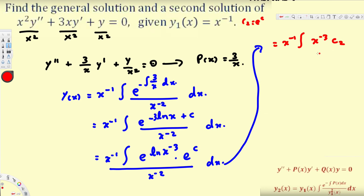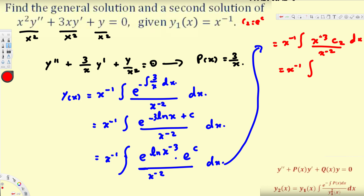So we have x⁻³ · c₂ divided by x⁻². Since x⁻³ is 1/x³ and x⁻² is 1/x², the x² flips to the top. Let's rearrange: x⁻¹ · ∫ (1/x³) · x² · c₂ dx. Simplifying inside the integral, 1/x³ times x² gives 1/x, so we have x⁻¹ · ∫ (c₂/x) dx.